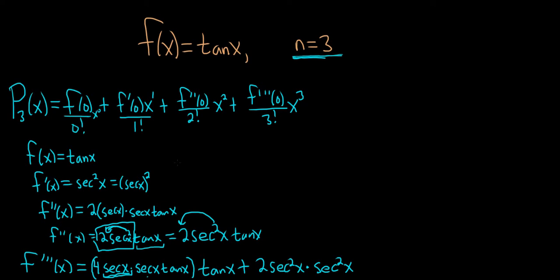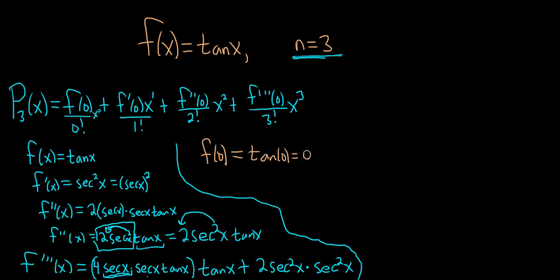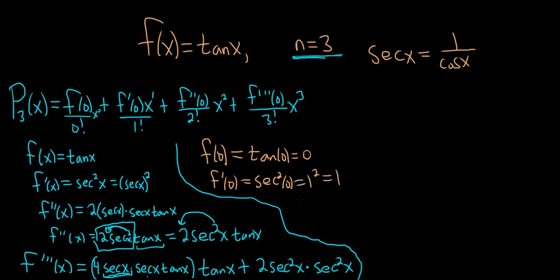Now we plug in the numbers. I didn't simplify, hoping things will go away when we plug in zeros. So f(0) is just tangent of 0, which is 0. For f'(0), we plug 0 into secant squared — recall secant(x) is 1 over cosine(x), and cosine(0) is 1, so this is 1 squared, which equals 1. For f''(0), we look at 2 secant squared(x) tan(x) — plugging in 0 for tangent gives 0, so f''(0) equals 0.